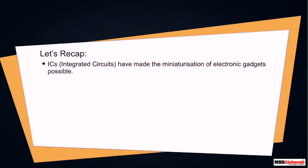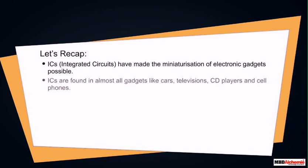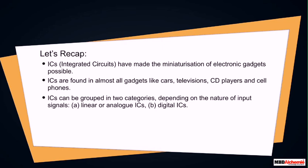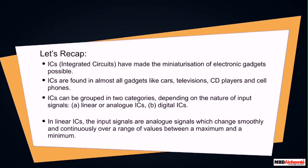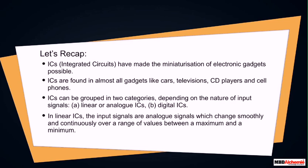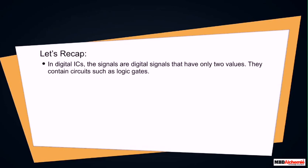Let's recap. ICs — integrated circuits — have made the miniaturization of electronic gadgets possible. ICs are found in almost all gadgets like cars, televisions, CD players, and cell phones. ICs can be grouped into two categories depending on the nature of input signals: (A) linear or analog ICs, and (B) digital ICs. In linear ICs, the input signals are analog signals which change smoothly and continuously over a range of values between a maximum and a minimum. In digital ICs, the signals are digital signals that have only two values.